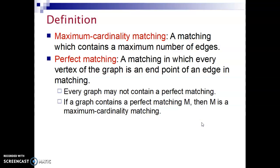So, a maximum cardinality matching is a matching which contains a maximum number of edges. A perfect matching is defined as a matching in which every vertex of the graph is an endpoint of an edge in the matching.